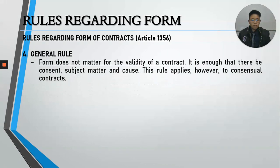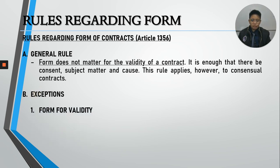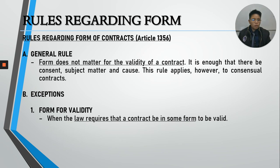The rules regarding form are found in Article 1356. As a general rule, form does not matter for the validity of a contract — contracts can be entered into in whatever form. However, this applies only to consensual contracts: as long as there is consent, object, and cause, the contract is valid. Because this is a general rule, there are exceptions. Sometimes form is required for validity, meaning the law requires a contract be in a particular form to be valid.